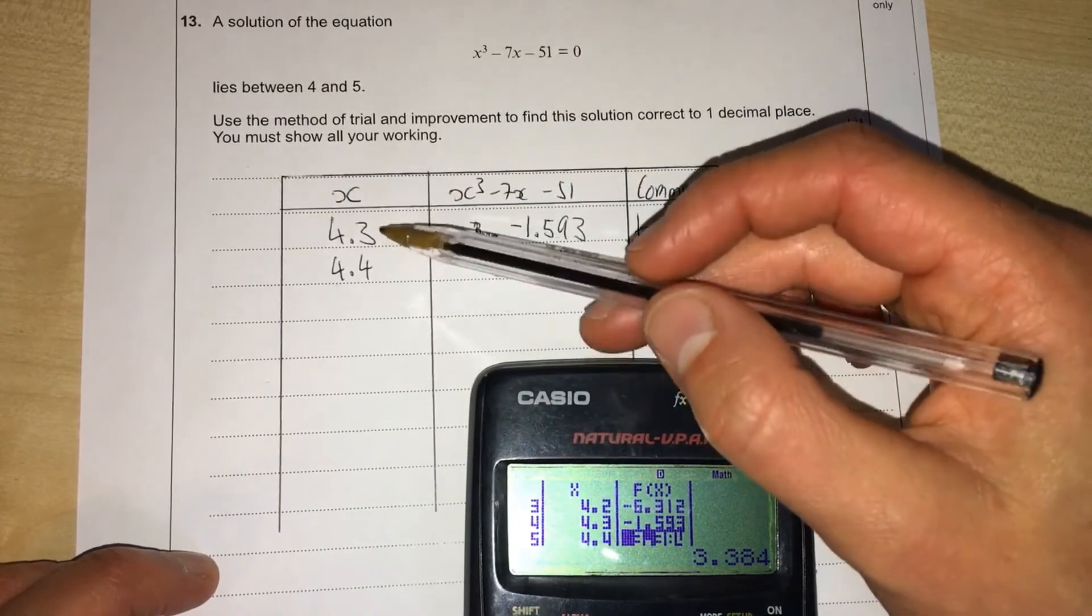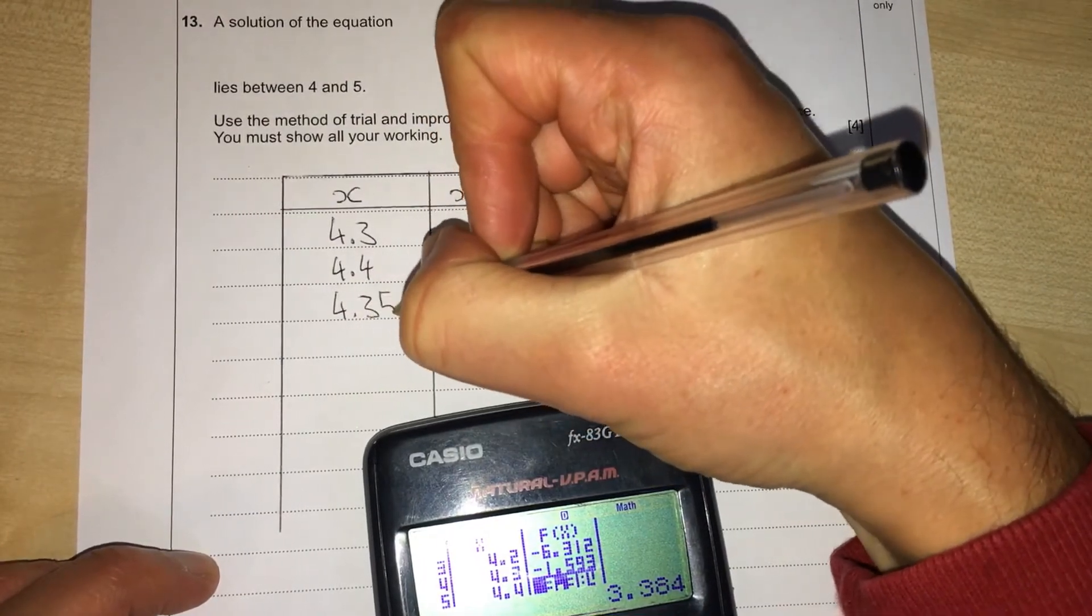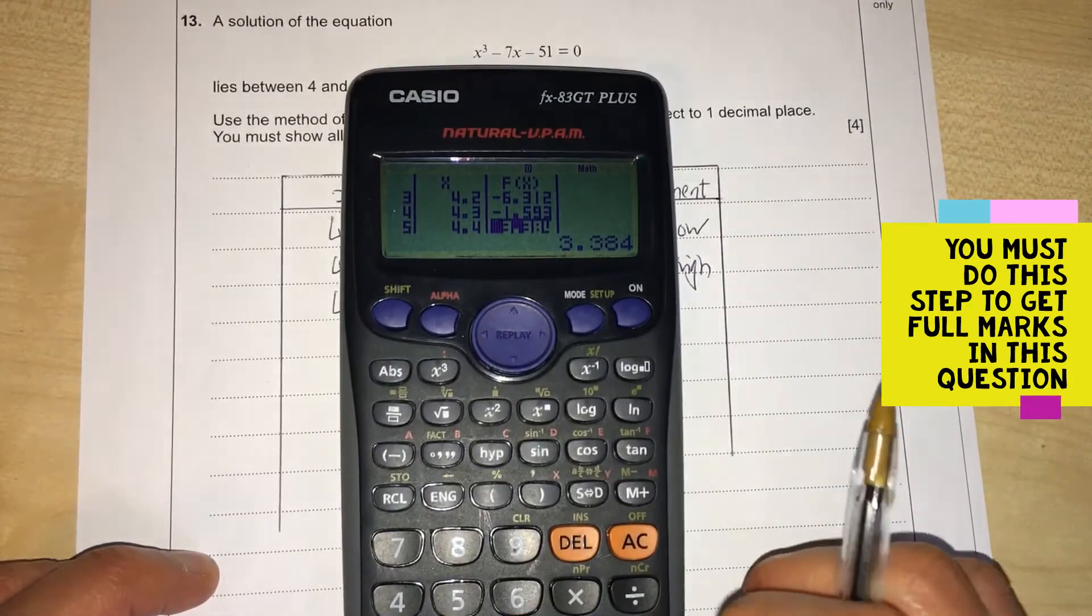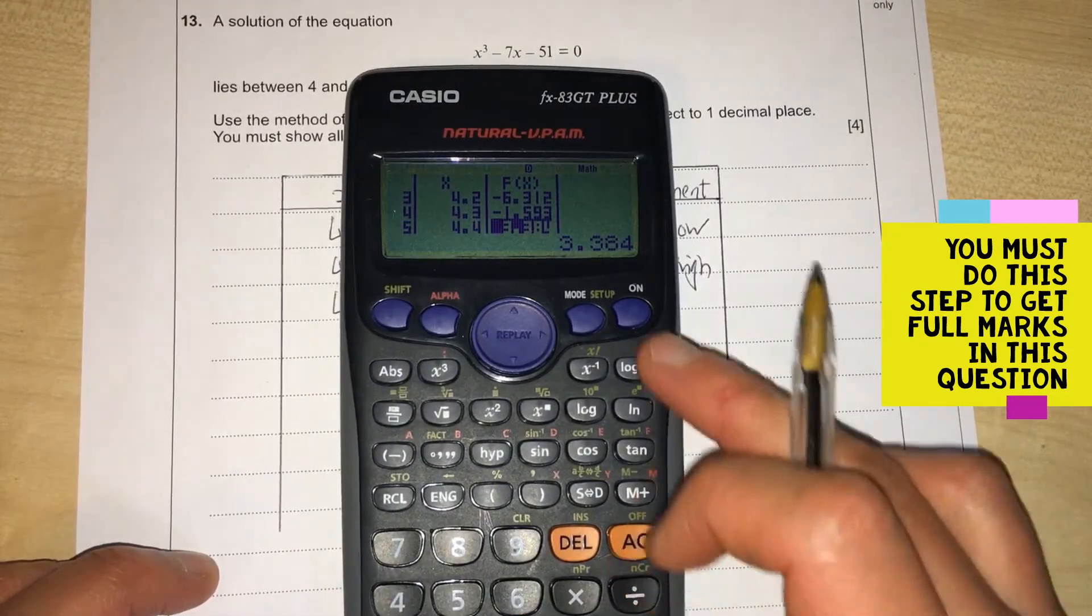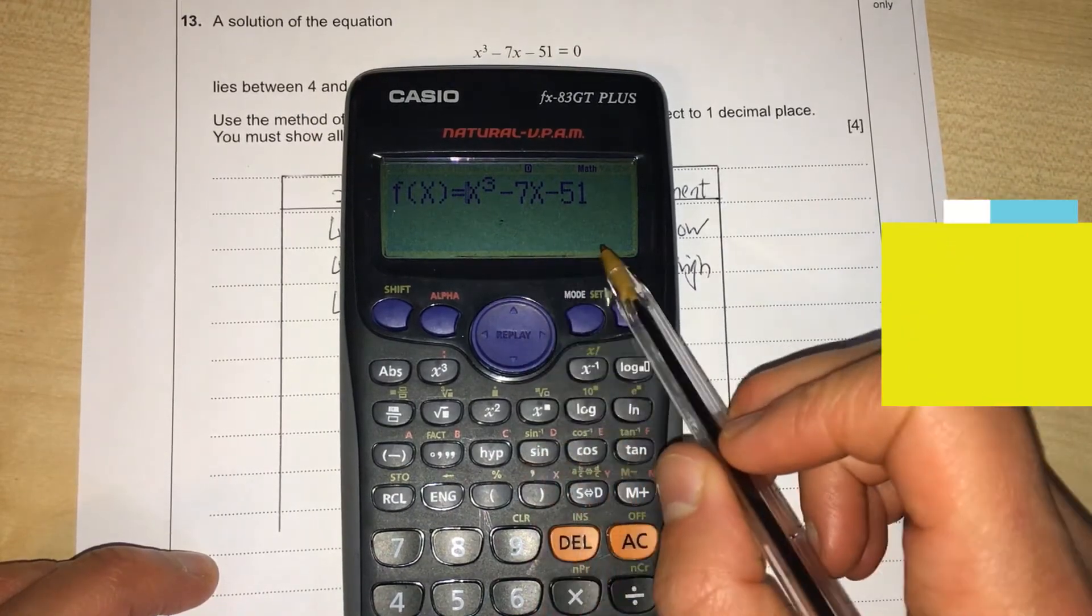So we do one more step: 4.35, which is halfway between these. If you go back to the calculator, press the orange button—not on, press AC—it goes back to this bit.